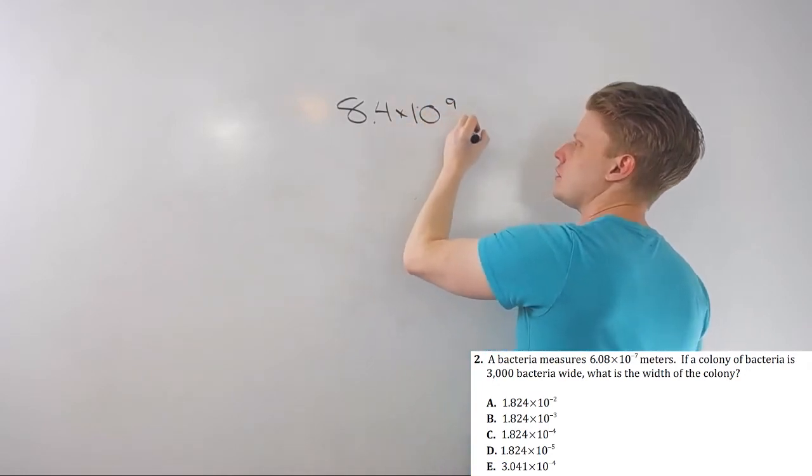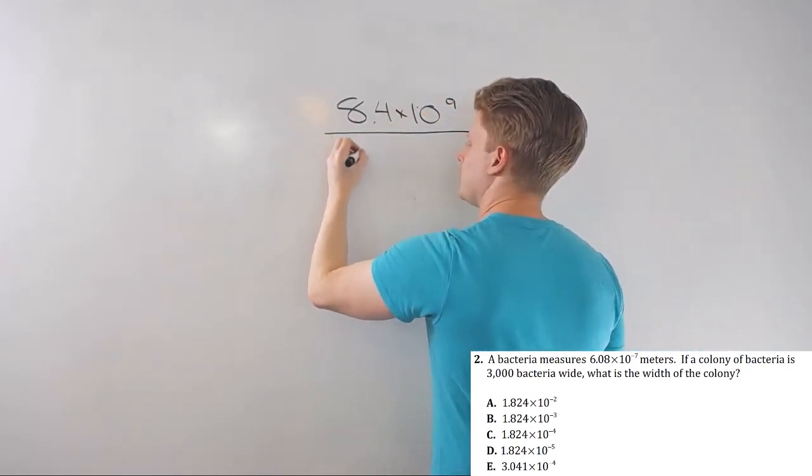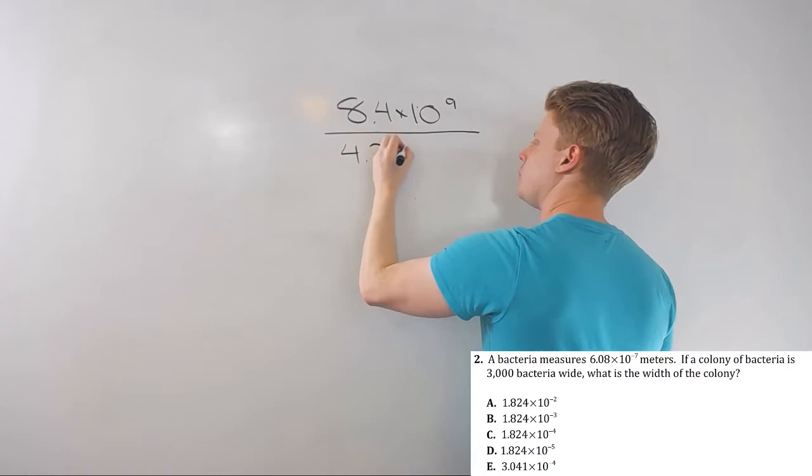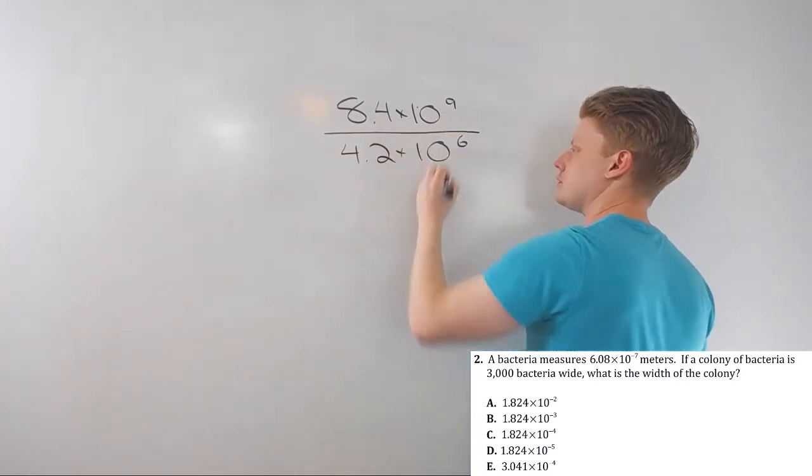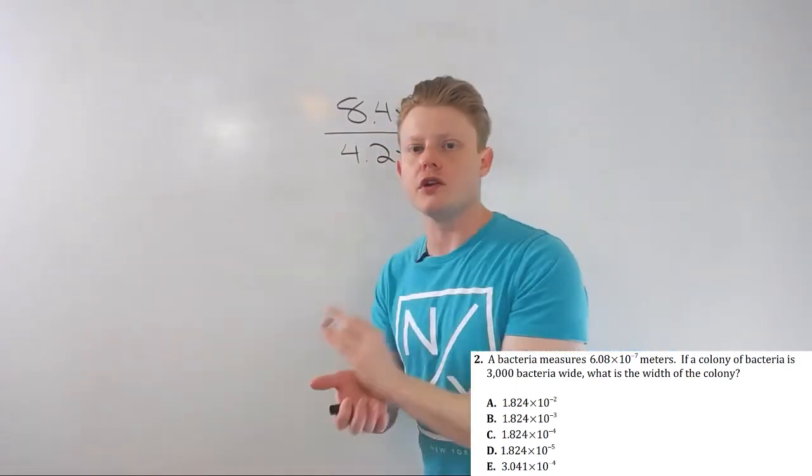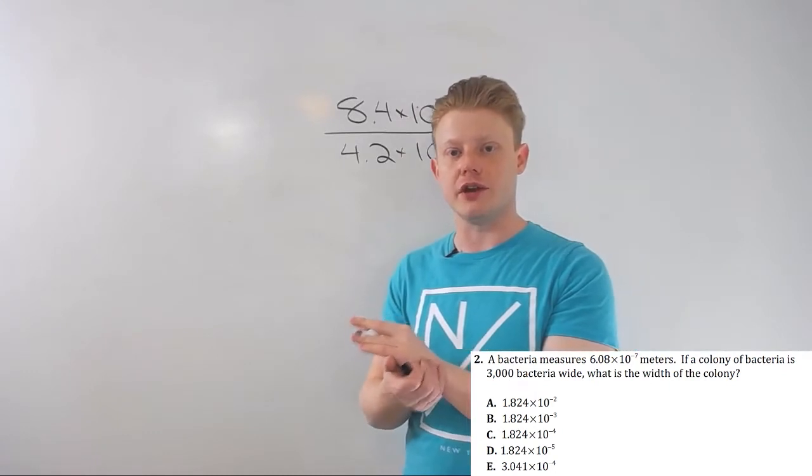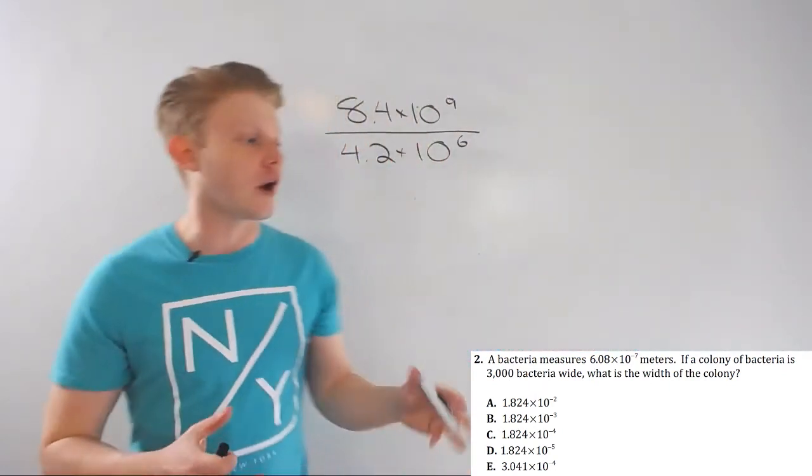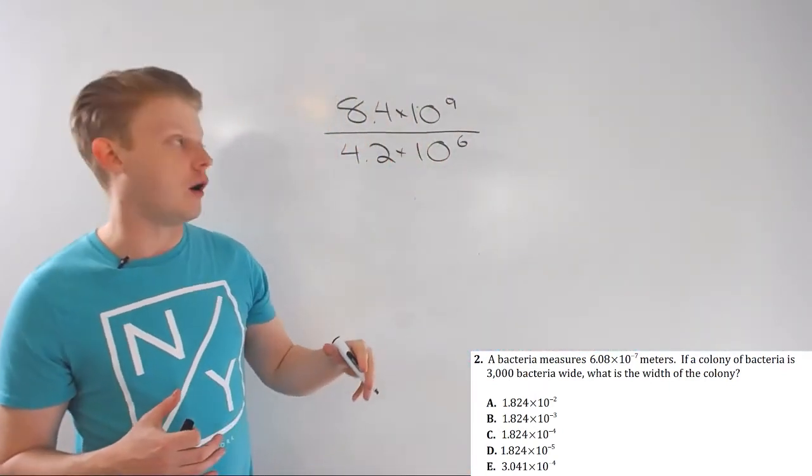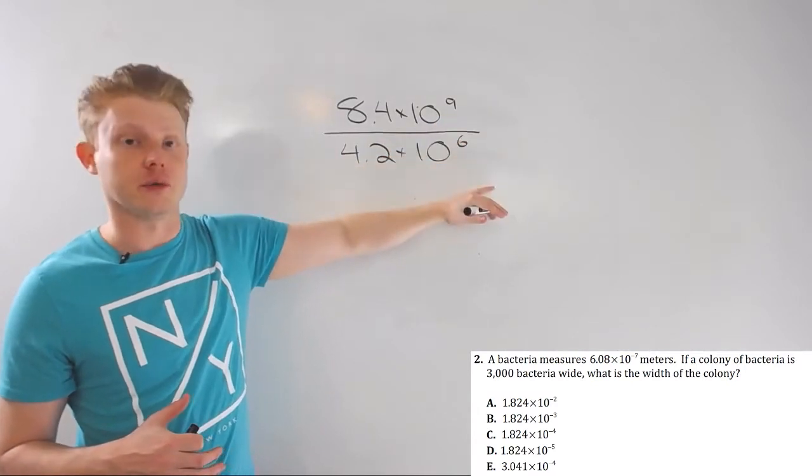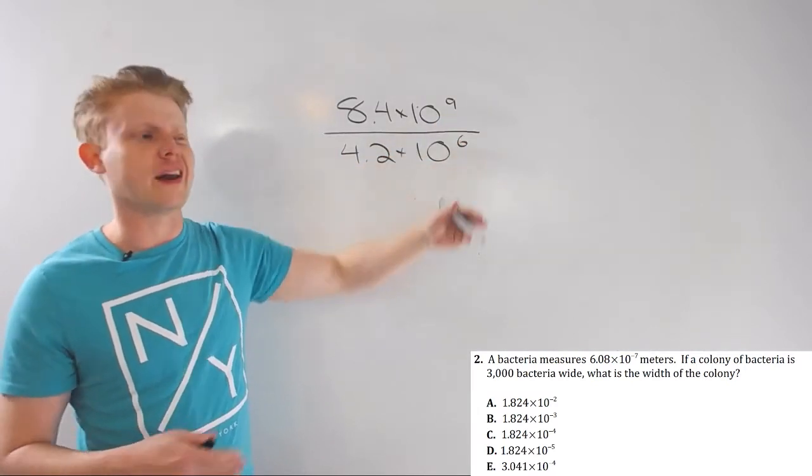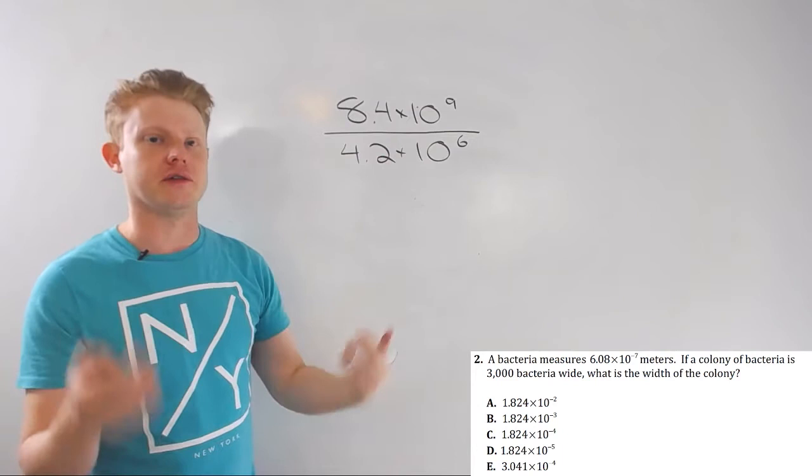Let's say I have 8.4 times 10 to the ninth divided by 4.2 times 10 to the sixth. Now, I want to talk about the mechanics of scientific notation when we deal with the second problem. Right now, I just want to focus on the operations with exponents part. We'll kind of backtrack in a way and talk about how scientific notation works in a minute.